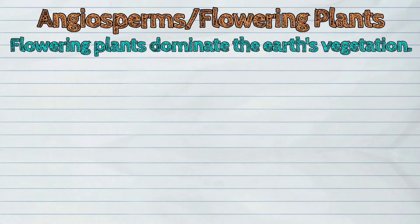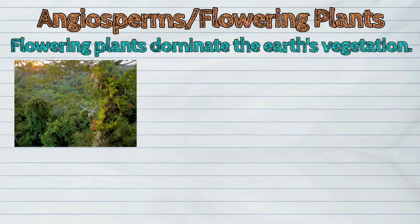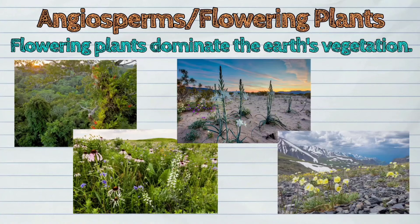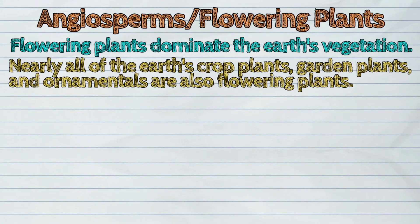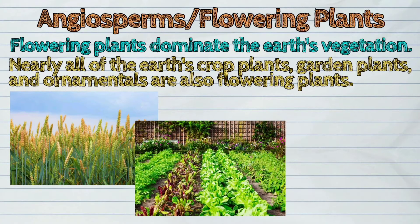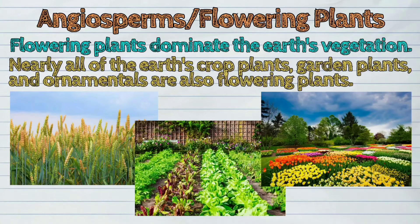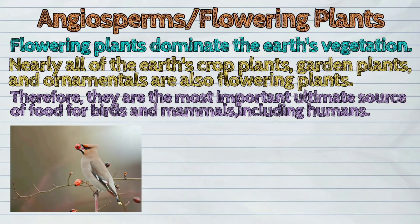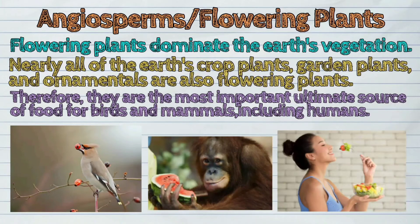Flowering plants dominate the Earth's vegetation. Forests, grasslands, deserts, and tundra are composed chiefly of flowering plants. Nearly all of the Earth's crop plants, garden plants, and ornamentals are also flowering plants. Therefore, they are the most important ultimate source of food for birds and mammals, including humans.